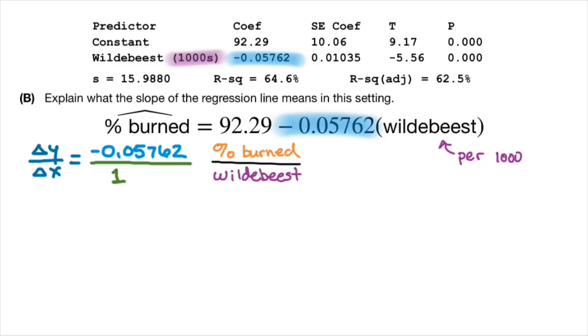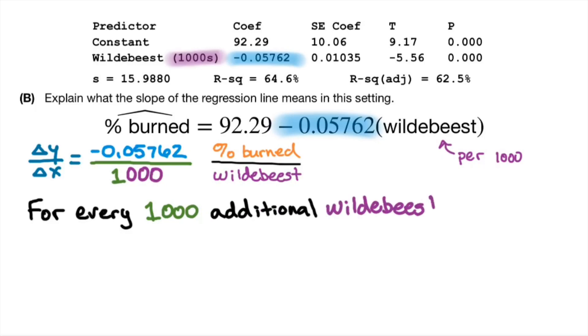But there's a slight problem. We're told in the stem of the question and also in the computer output that Wildebeest is out of every 1,000. So if I have 1 on the x-axis, that's actually representing 1,000. If I have 15, that's 15,000. So I need to make my change of x reflect that. So for every additional 1,000 Wildebeest, we predict a decrease of 0.05762% burned.